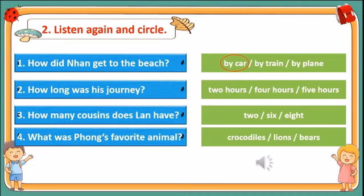I'm Lan. I went on vacation with all my cousins to a big house in the mountains. I have eight cousins, so we had lots of fun together. There was a big lake near the house, so we went for walks and also went swimming. It was very warm, so it was okay when we got wet. We also sang outside in the evening. It was very beautiful in the mountains.